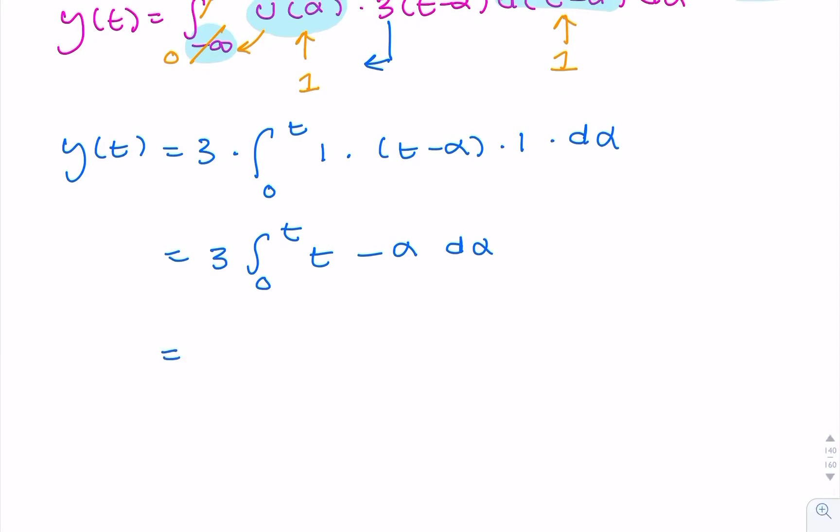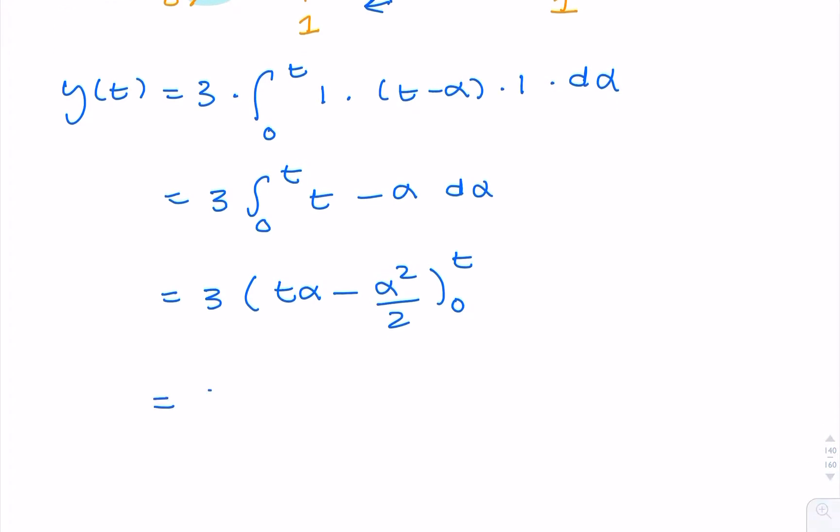So that will give you 3t alpha minus alpha squared over two from zero to t. And that will give you 3t squared minus t squared over two, which will give you three over two t squared.